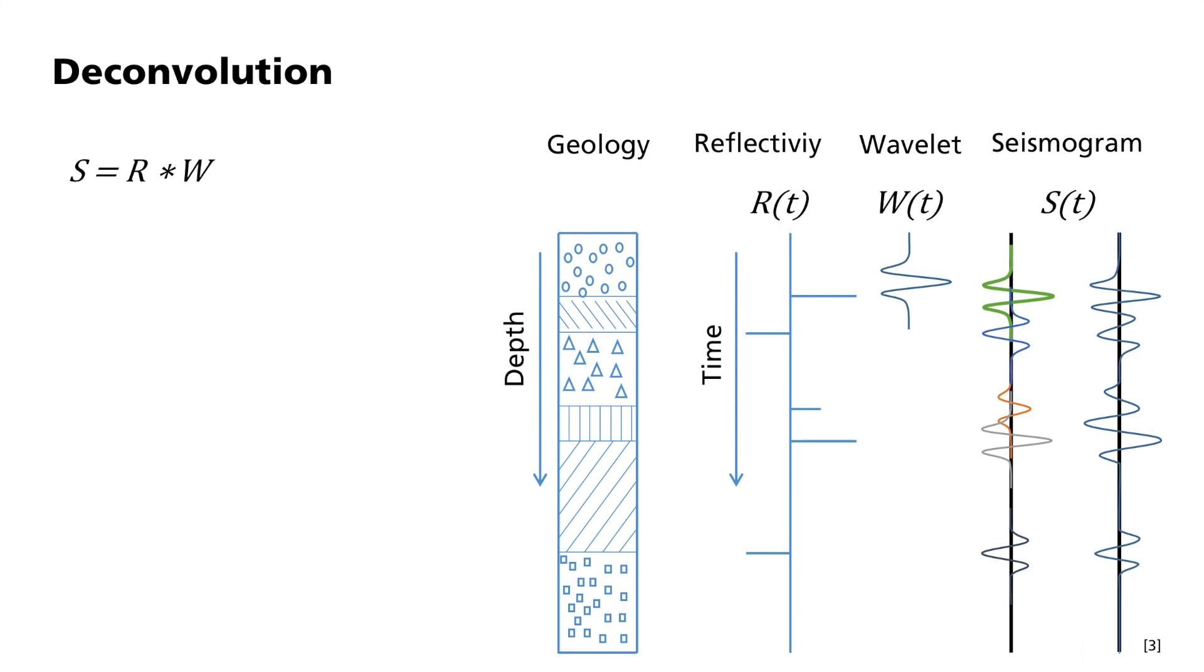Now imagine a wavelet W that corresponds to a delta function, that is a unit impulse with a duration of zero. The convolution of R and the delta function would be equal to R. The resulting seismogram S would be equal to the reflectivity function R, and the goal will have been reached. A real source can, however, produce no unit pulse and always has a defined duration. You can, however, manipulate a wavelet mathematically in such a way that a unit impulse arises.